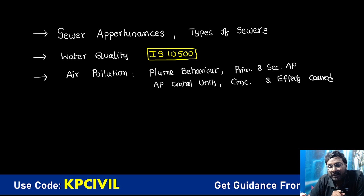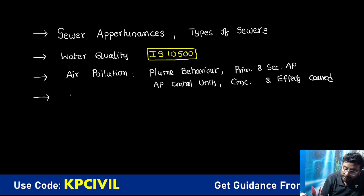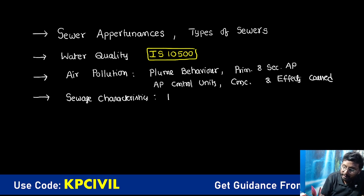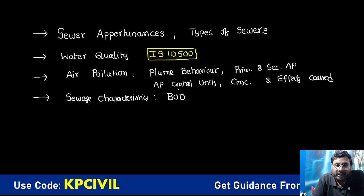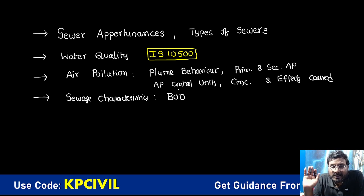So two questions from each — sewer appurtenances, water quality, air pollution — six questions easily. Followed by sewage characteristics: mostly BOD. There are almost no questions from COD, but the order of BOD, COD, TOD, THOD is the most repeated question. Include sewage characteristics, BOD, and order of oxygen demands — TOC — those are included here.